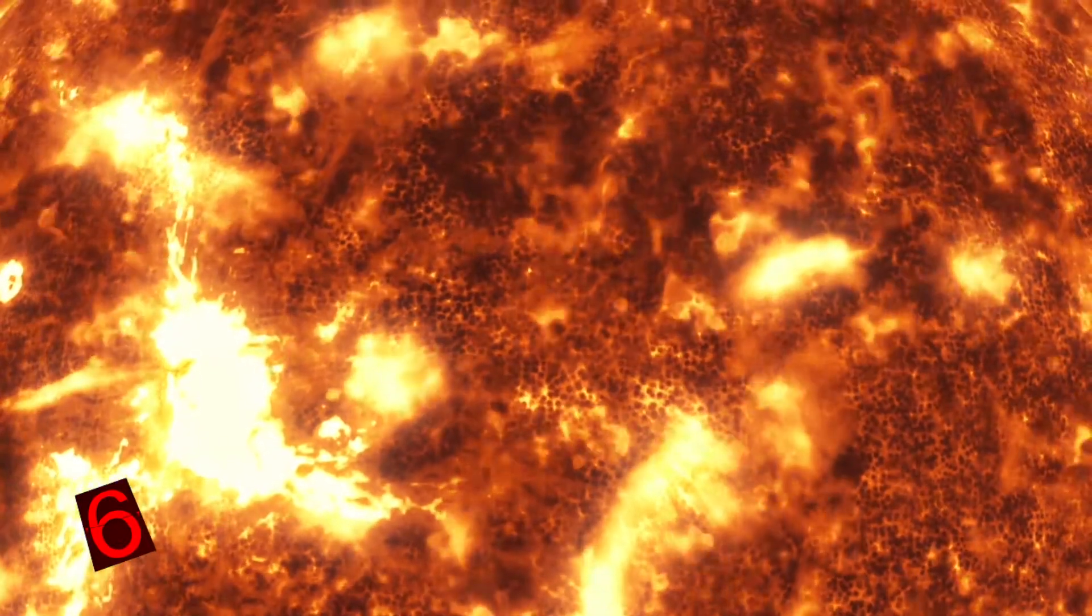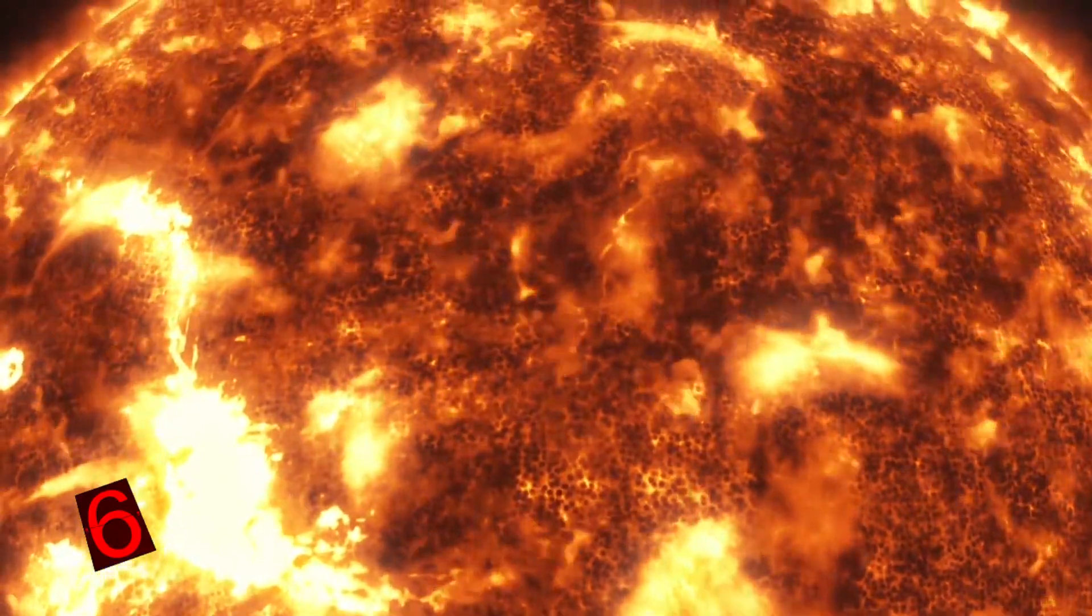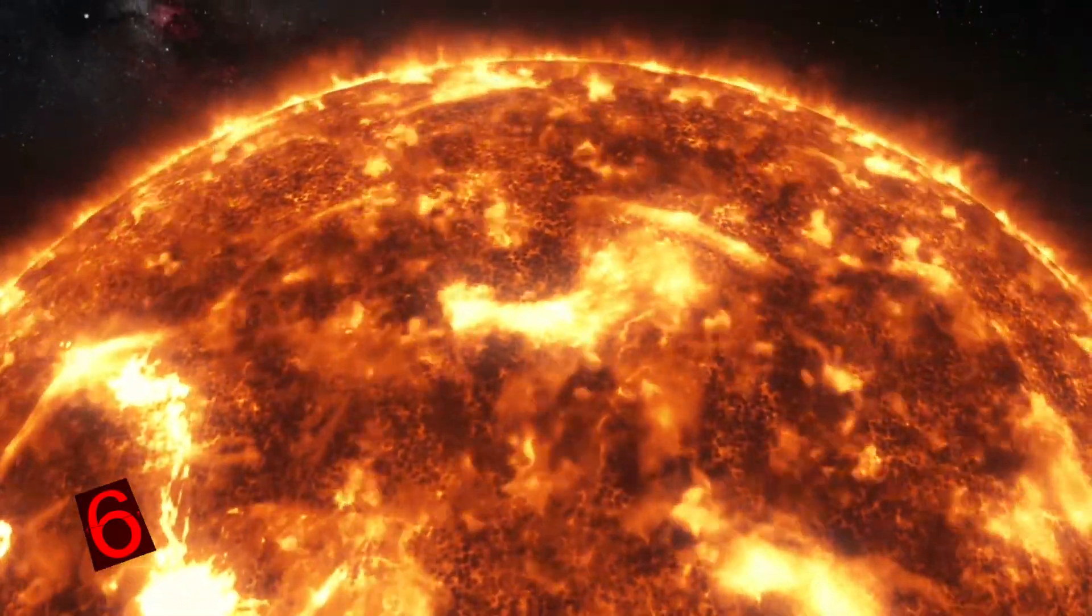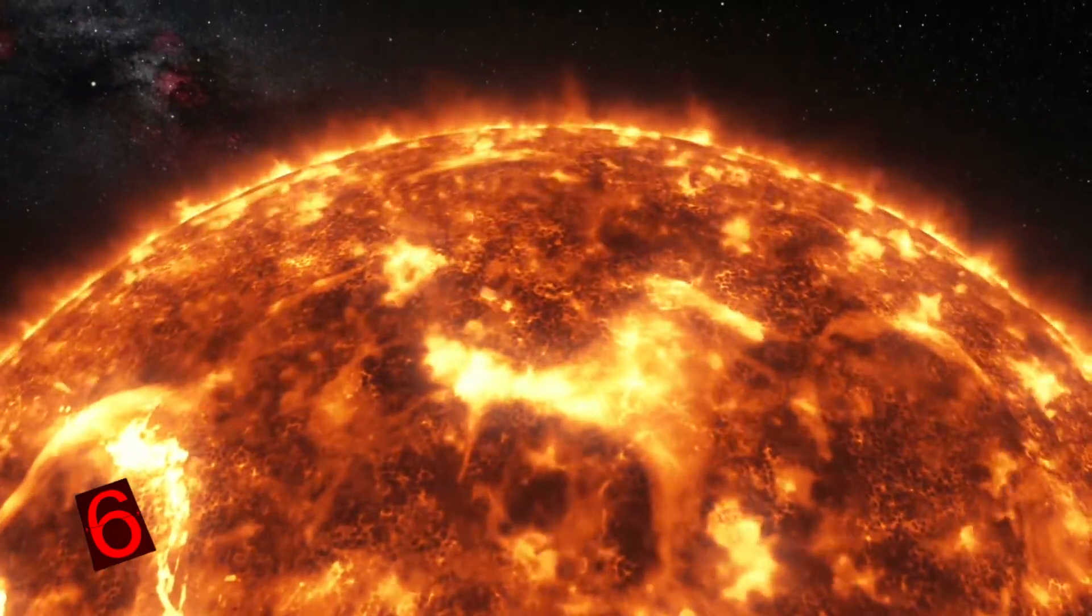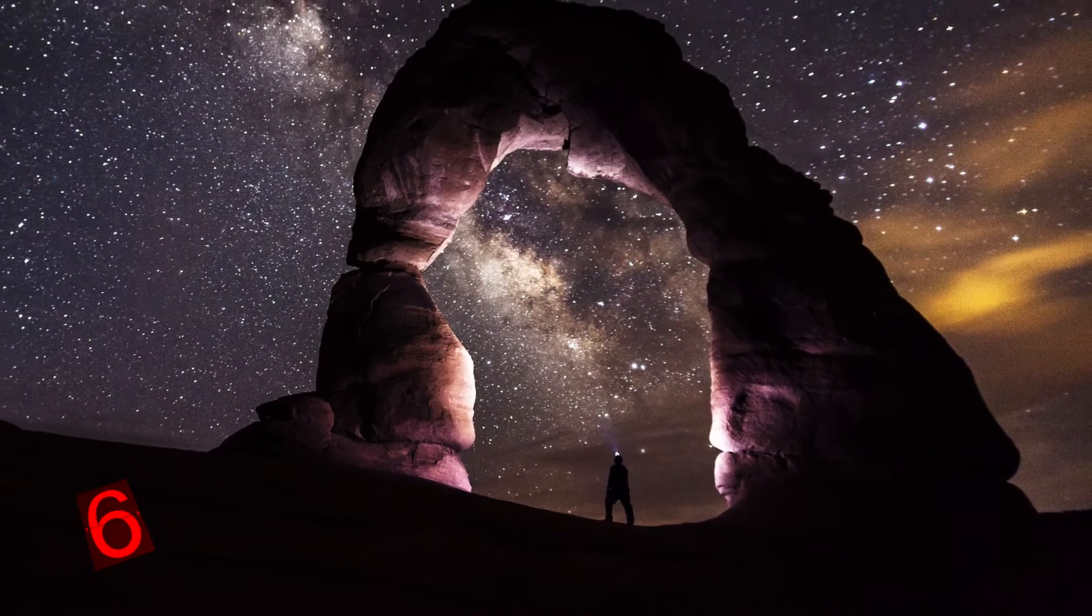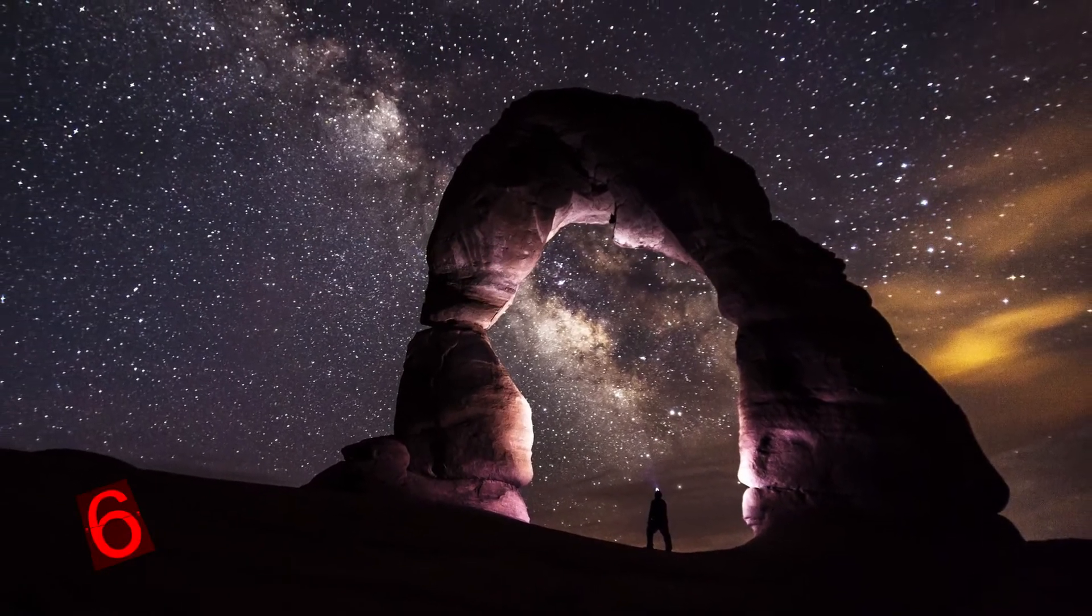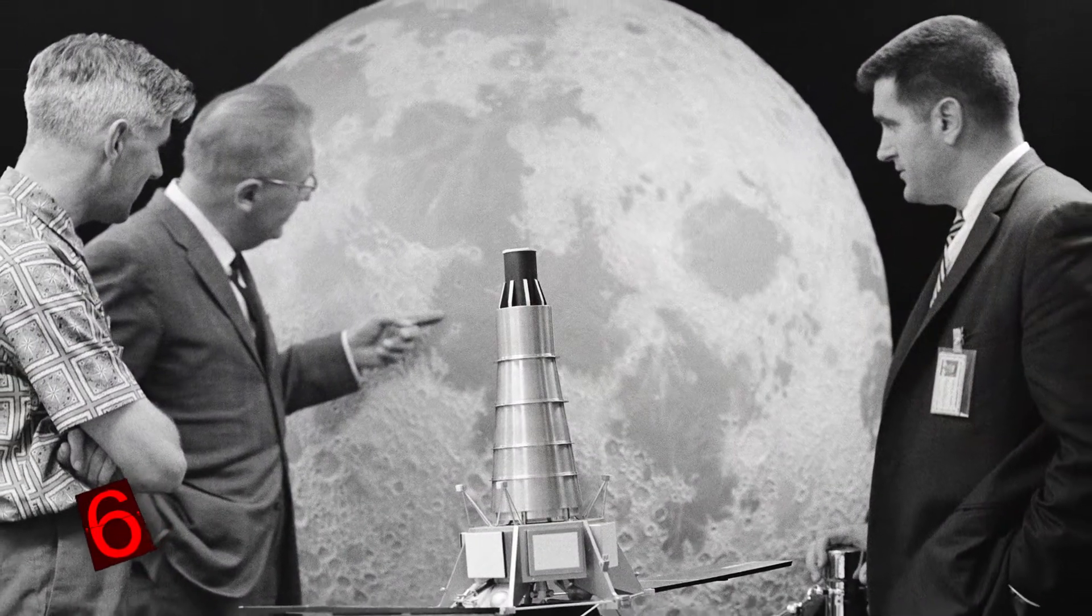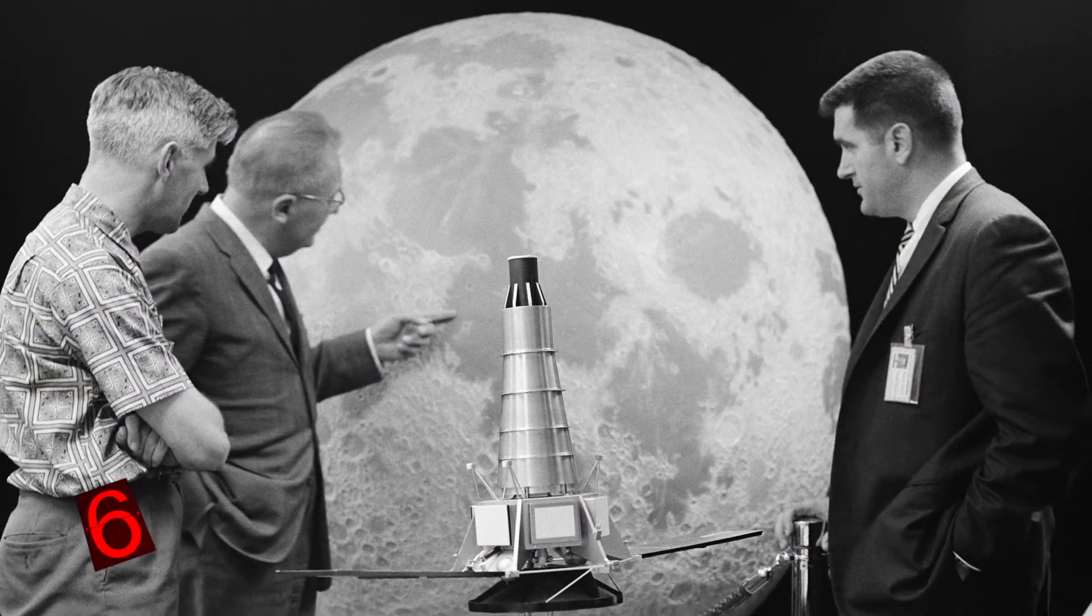Another example is our closest star, the Sun. It's located only 92.9 million miles away, which means that if the Sun stopped burning, we wouldn't know about it for 8 minutes and 20 seconds. To think of it another way, we are never viewing the universe in its current state, only what it used to look like. Astronomers are, in effect, the historians of the universe.